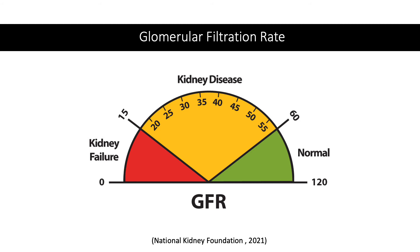To get an estimate, your provider will use a method known as a GFR calculator. A GFR calculator is a type of mathematical formula that estimates the rate of filtration using some or all of the following information: the result of a blood test that measures creatinine, a waste product filtered by the kidneys, your age, your height, your weight, your gender, and your ethnicity.